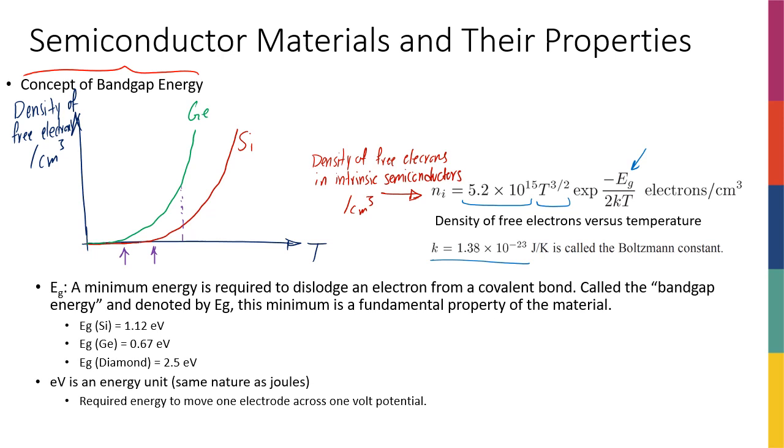So what is the Eg? Eg is defined as the minimum energy that is required to dislodge an electron from a covalent bond. It's called the band gap energy and it's denoted by Eg. This minimum is a fundamental property of the material. So the minimum energy that you require, simply speaking, the minimum energy that you require to actually for an electron in a specific material to break away. And as you can see, this minimum energy for silicon is 1.12 electron volts and for germanium is 0.67. So for germanium is much smaller than silicon. So you can imagine that that's why silicon is not as conductive as germanium. And you can see it like for the number for a good insulator, such as diamond, you can see it's 2.5 eV. So it's really high. So you need a lot of temperature for a diamond to actually make it a conductor to actually have some free electrons in there. That's why it's not a good conductor or it's a good isolator.